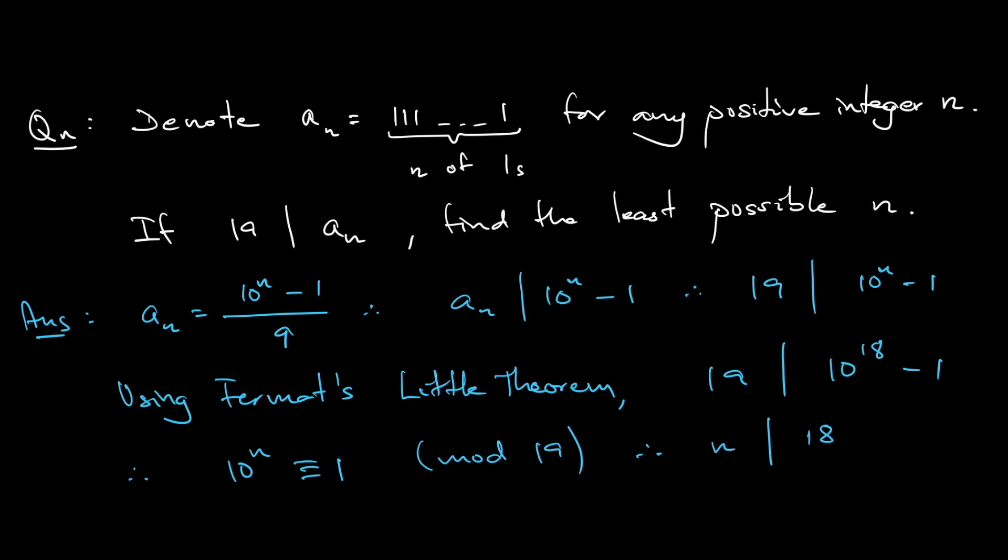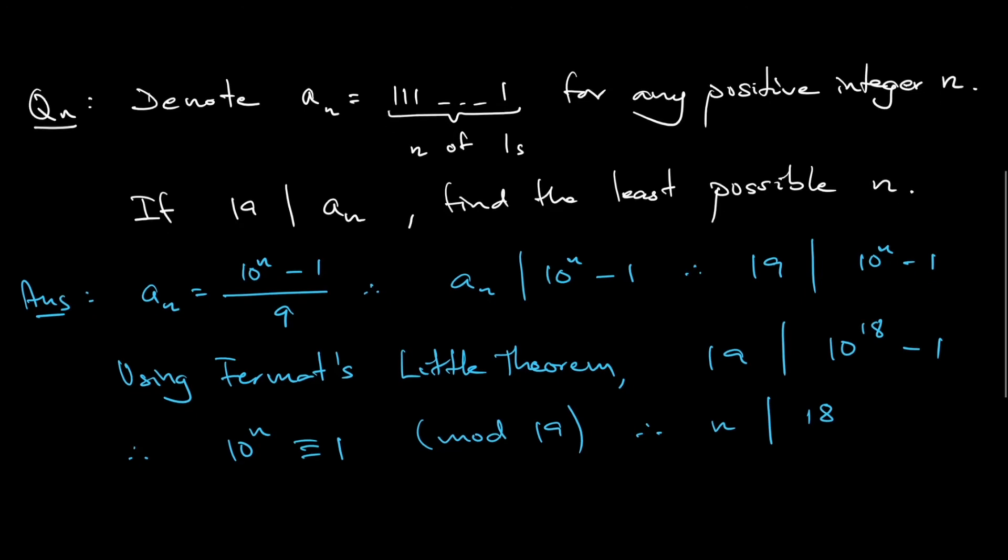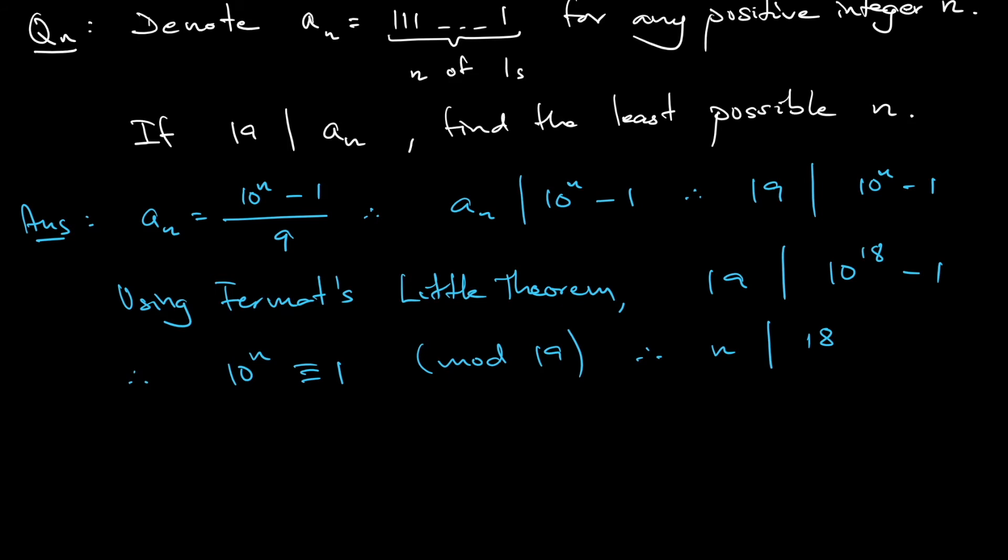Another way of saying this is n is a factor of 18. You can check from here. The question asks for the least possible n, so what is the least positive factor of 18 such that it still satisfies the condition?